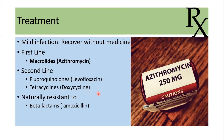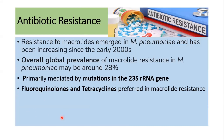Because this bacterium lacks a cell wall, it is naturally resistant to beta-lactam and other cell wall-targeting antibiotics. Macrolide resistance is an emerging concern with a global prevalence of around 28 percent, and this resistance is mediated by a mutation in the 23S rRNA gene. Fluoroquinolones and tetracyclines are the preferred treatment options for patients with macrolide resistance.